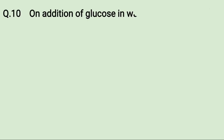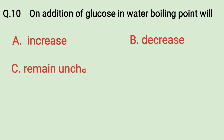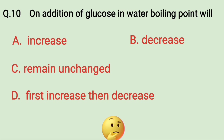On addition of glucose in water, the boiling point will: A. Increase, B. Decrease, C. Remain unchanged, D. First increase then decrease. Try to solve it. The correct answer is A. Increase.